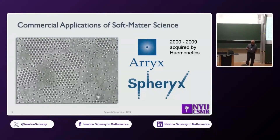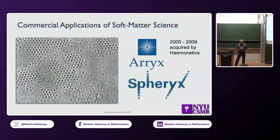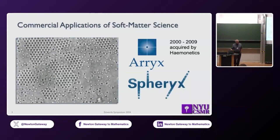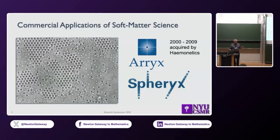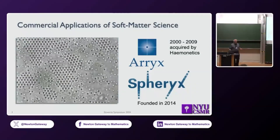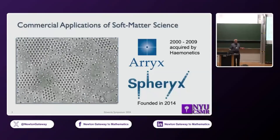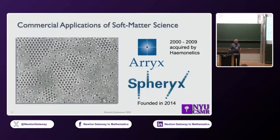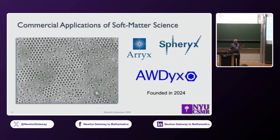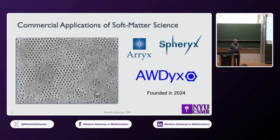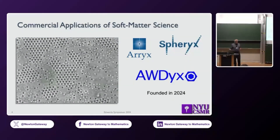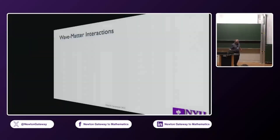These are names we could own that have Ys and Xs, if not Qs. Spherix was founded in 2014, still going, actually based in New York City — so when you come to visit, we can see what the startup company is doing. Just this year, we founded another company called Audix, based on science we'll talk about. All three of these companies are based on the physics of wave-matter interactions.